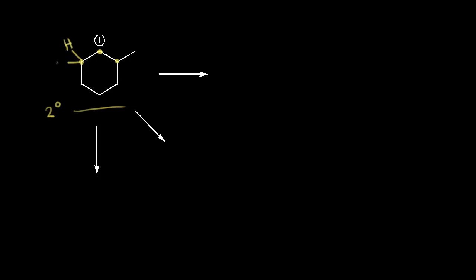Let's think about what could possibly shift here. First, let's pick one of the two hydrogens on this carbon and say one of them is involved in a hydride shift. So we take this hydrogen and these two electrons in a hydride shift and we move them over to this carbon. Let's draw what we would form.